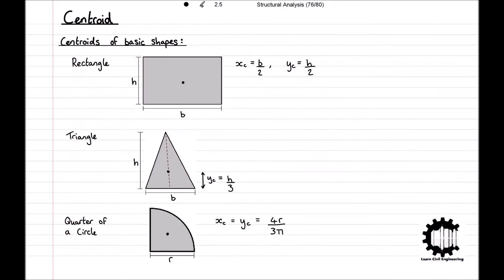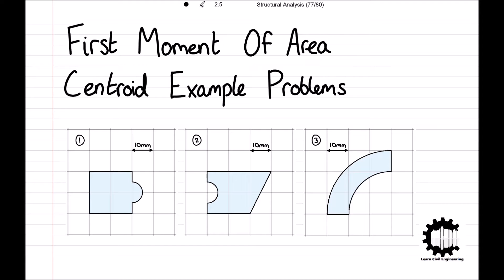We also discussed the equations for calculating the centroid of compound shapes: the x-coordinate to the centroid of a rectangle is equal to one-half of the base, and the y-coordinate is equal to one-half of the height. The y-coordinate to the centroid of a triangle is equal to one-third of the height, and the x- and y-coordinate of the centroid of a quarter circle is equal to 4r divided by 3π. In this video, we'll be working through three examples utilising the first moment of area and these centroid equations to determine the location of the centroid for each complex section.